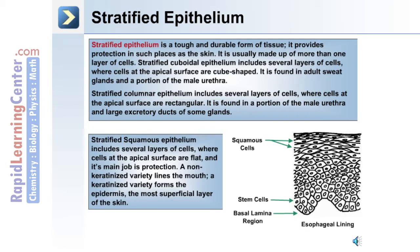Here is an image of the esophageal lining cross-section, showing squamous cells at the apical end, stem cells, and a basal laminar region. Stratified squamous epithelium includes several layers of cells. The non-keratinized variety lines the mouth, while the keratinized variety of this tissue forms the epidermis, the most superficial layer of the skin.